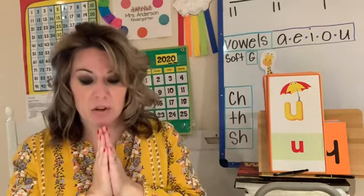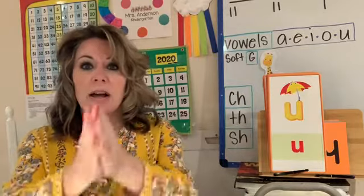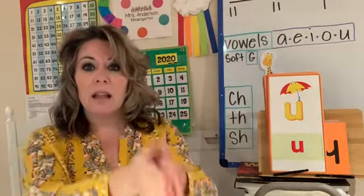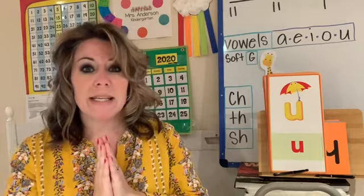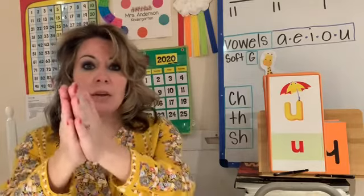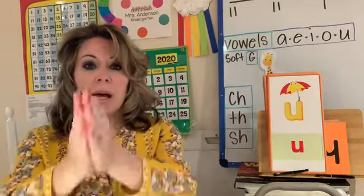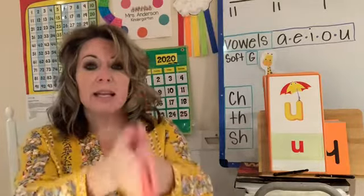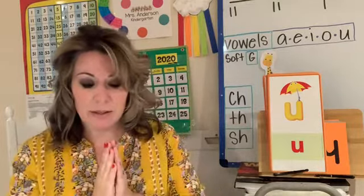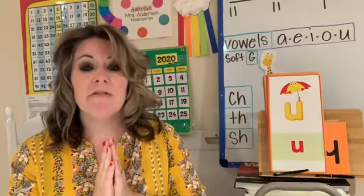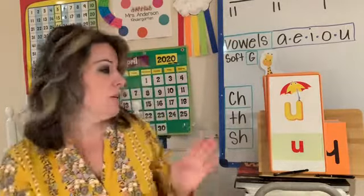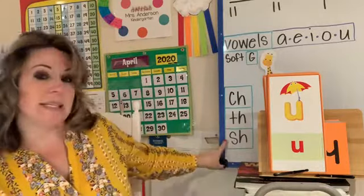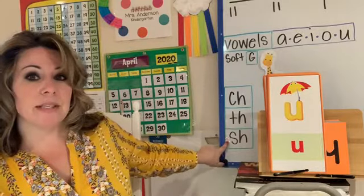Field: F, e, l, d. Good. Wind: W, i, n, d. Good. And fish. Fish. Fish. Good. It's that digraph sound, isn't it?